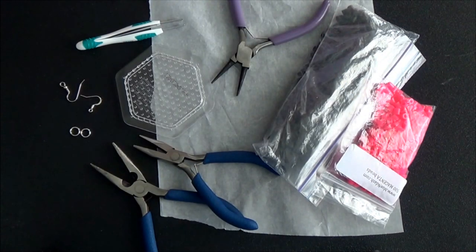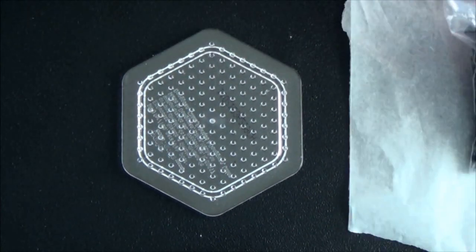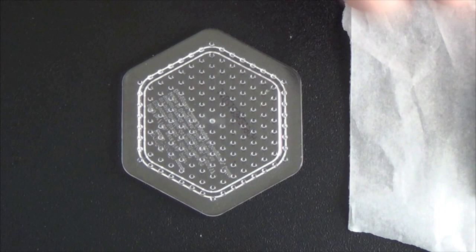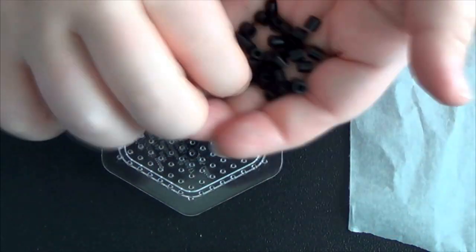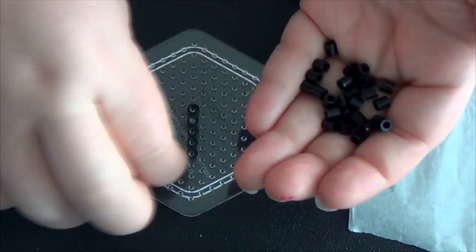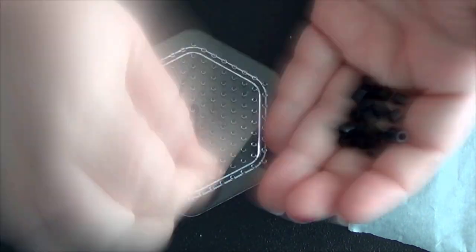As you can see, I'm putting the pointy corner of this hexagon towards me and away from me - you need to make sure it's in this specific position to make your butterfly. I'm starting by making the outline of my butterfly; it makes it much easier to fill it in with those pink perlers.